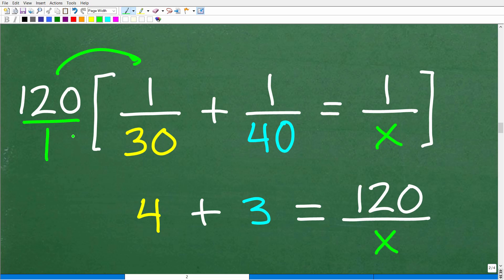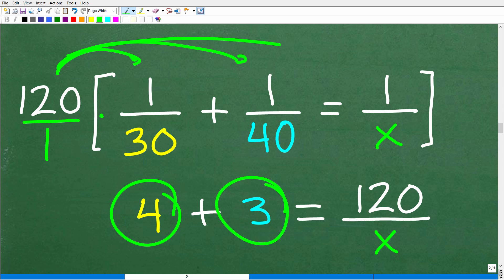Here is how that's going to look. 120 times the entire equation is going to be 120 times 1/30. 30 goes into 120, we're multiplying fractions, so this is 120/1, so it's 120 times 1/30, 30 goes into 120, 4. Then it's 120 times 1/40, so 120/1 times 1/40, 40 goes into 123.